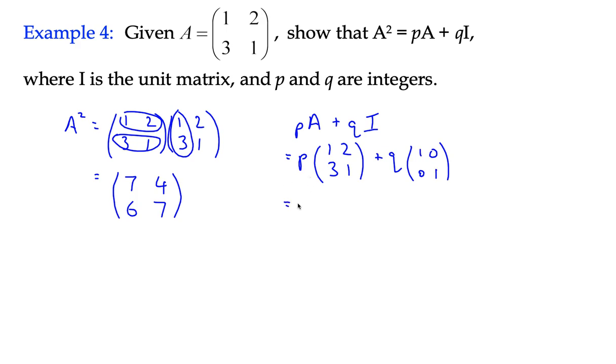So if we multiply that in, we get P times 1 is P, and then we get 2P, and then we get 3P, and then we get 1P, plus then Q times the unit matrix would just be Q, 0, 0, Q, and we can further simplify that by adding them together. The orders are the same, so we can add the first element P plus element Q to get P plus Q. In the row below it, we've got 3P plus 0 is just 3P. In the second column, we've got 2P plus 0 is 2P, and then P plus Q is just P plus Q.